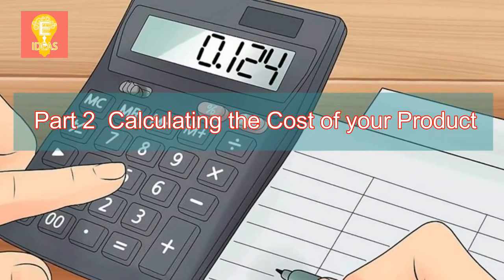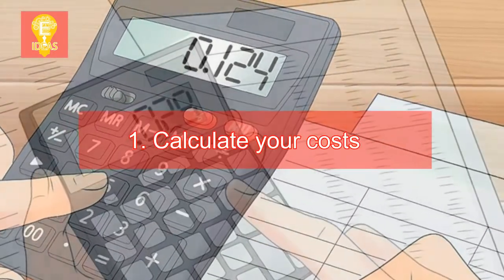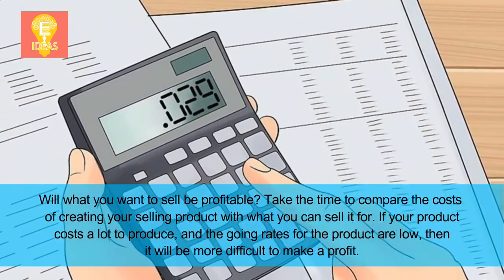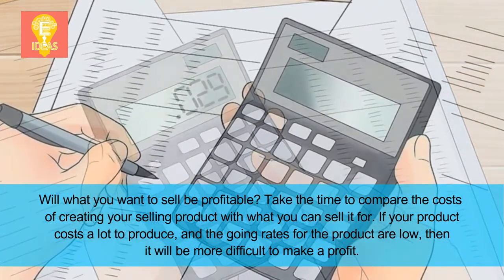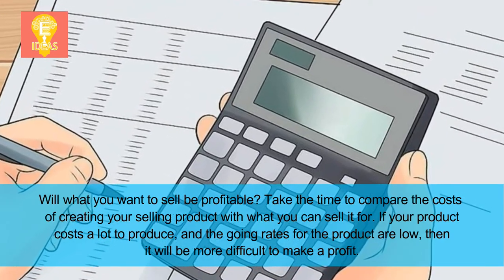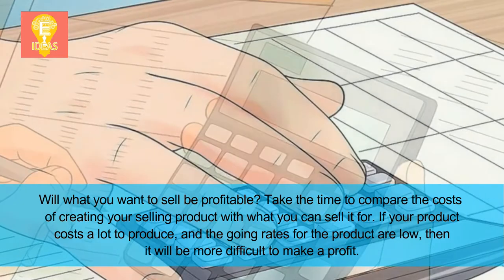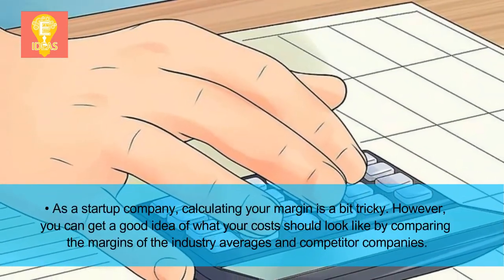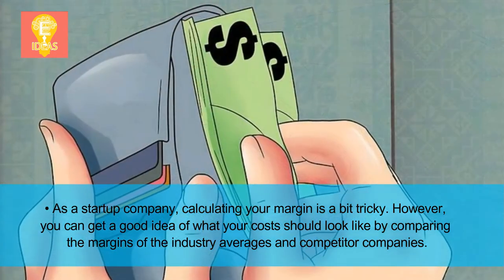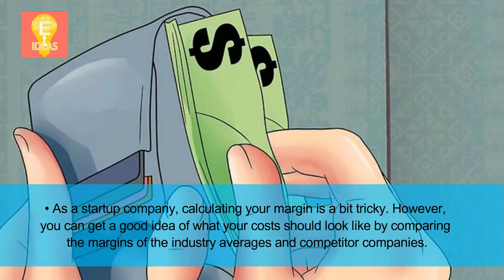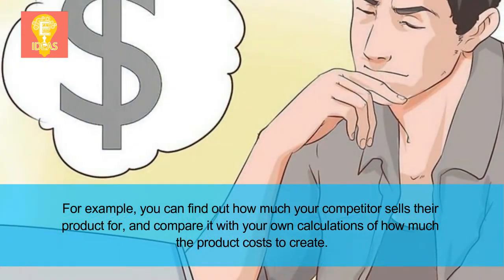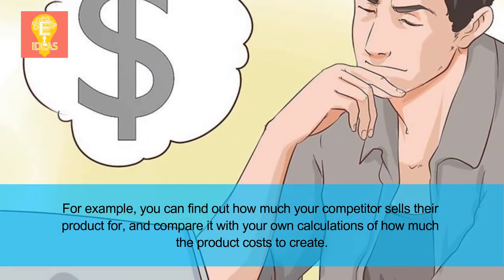Part 2: Calculating the cost of your product. Step 1: Calculate your costs — will what you want to sell be profitable? Take the time to compare the costs of creating your product with what you can sell it for. If your product costs a lot to produce and the going rates are low, it will be more difficult to make a profit. As a startup, calculating your margin is tricky, but you can get a good idea by comparing industry averages and competitor companies.